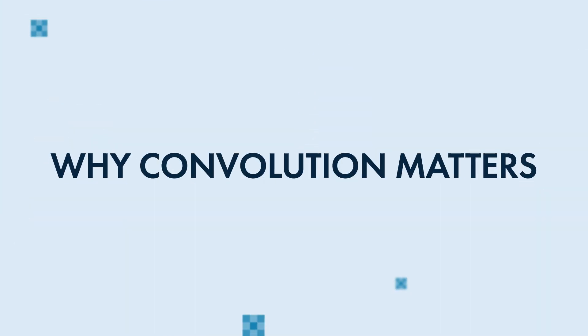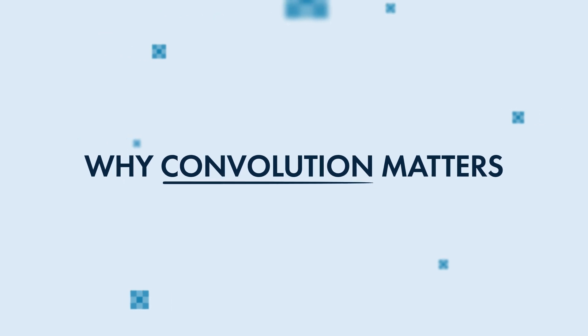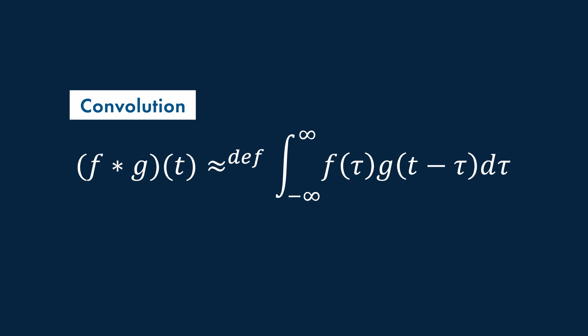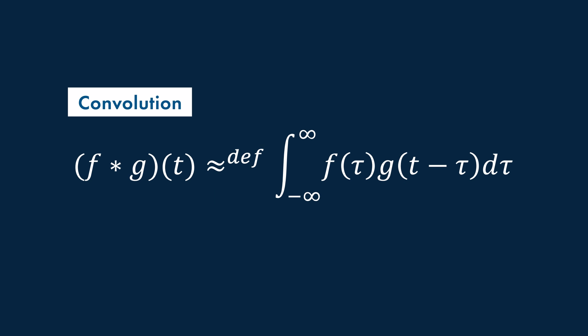Let's explore why convolution matters. Convolution is an integral defined by this equation here. Now, this might look scary at first, but let's break it down to get a better understanding. Convolution calculates how the shape of one function, f, is modified by another, g. It slides one function over the other, multiplying and integrating their product at each step, effectively blending them together in some way.